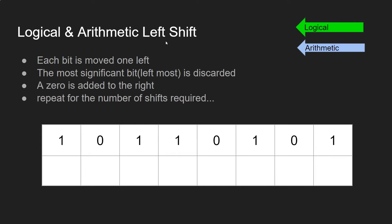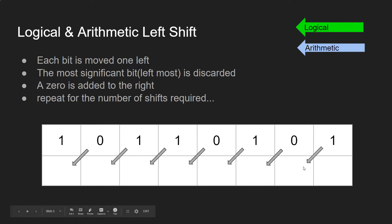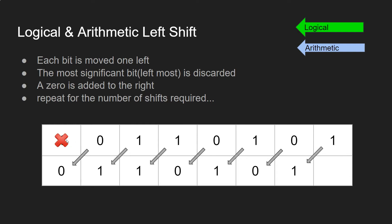The first one we're going to look at is how to do a left shift. This is the easiest one because it works for both logical and arithmetic shifts. So let's say we've got a binary number and we want to perform a logical or arithmetic left shift on it. The first thing we do is move each bit one to the left. The end number looks like that. You'll notice the leading bit gets discarded, and because it's a left shift we just add a zero on the right hand side.